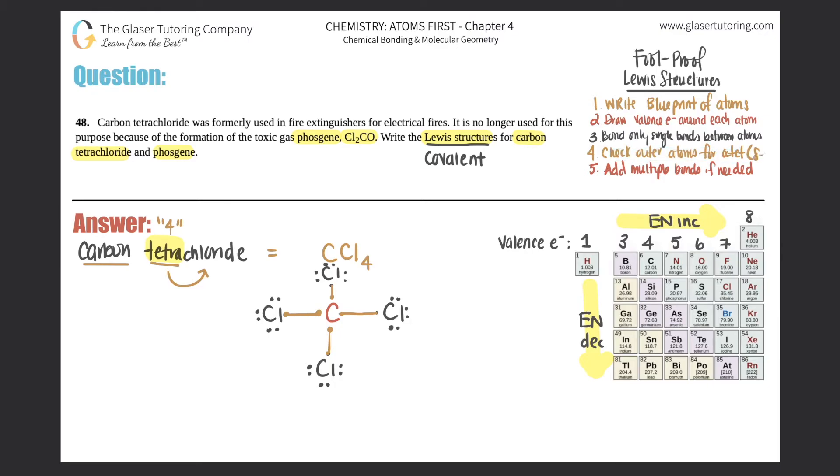Now I just check the outer atoms for the octet. And the octet means eight electrons. So in this case, we have chlorine. And how many electrons does chlorine have? Two, four, six. And now it has eight because that single bond is shared between the chlorine and the carbon. So that one has eight. That's good. This chlorine has two, four, six, eight electrons. So that has the octet. That's good. This chlorine has two, four, six, eight. And if we just check the last one over here, two, four, six, eight. So that's all good.